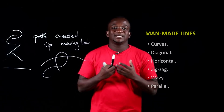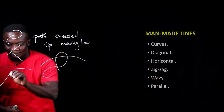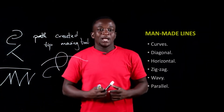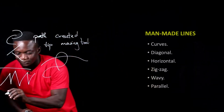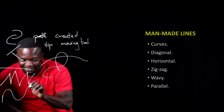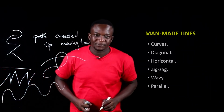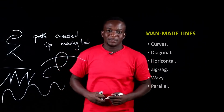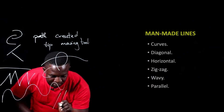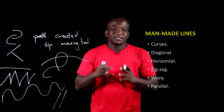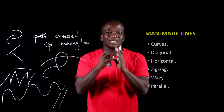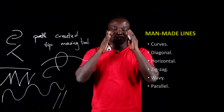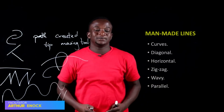And we have the zigzag line. And we have the wavy line, like the waves of the sea. And we also have what we call the parallel line. It could be two diagonal lines heading towards the same direction, or two horizontal lines with the same direction. It's a parallel line.